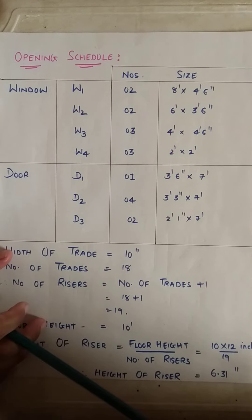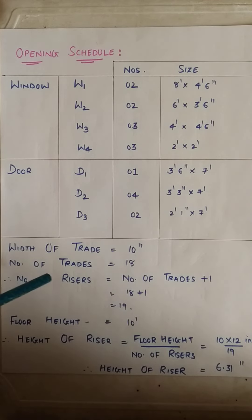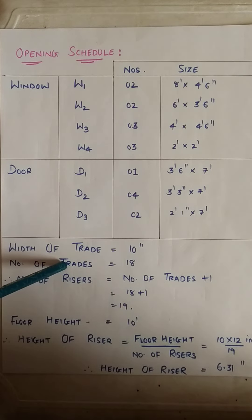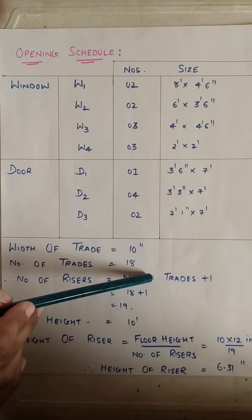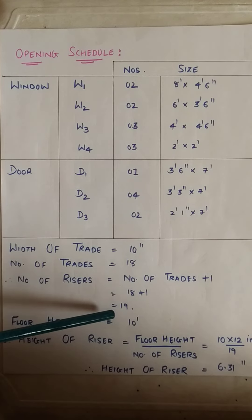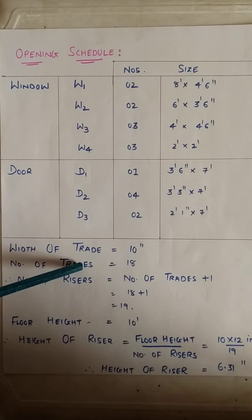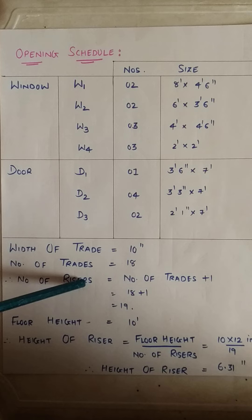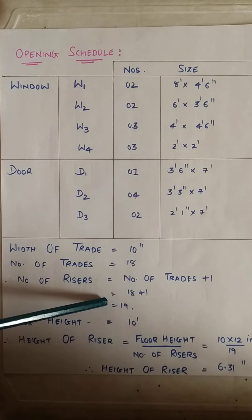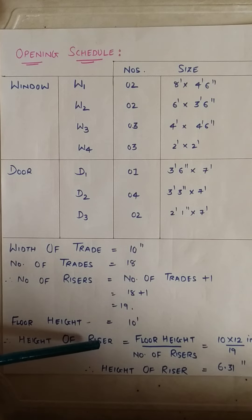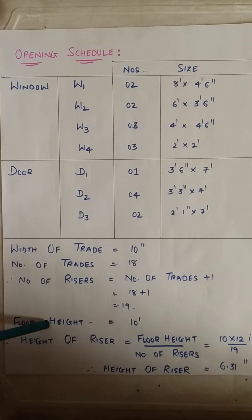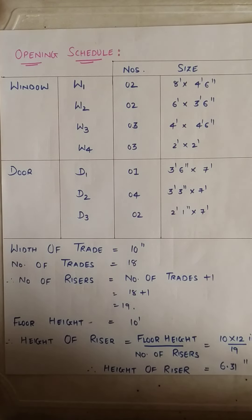The following calculation is for the staircase. From the figure, we have 18 numbers of treads, and the width of each tread is 10 inches. Since the number of treads is 18, the number of risers would be 18 plus 1, that is 19. Our floor height is 10 feet. So the height of each riser would be equal to the floor height divided by the number of risers. After calculation, the height of each riser is equal to 6.31 inches.